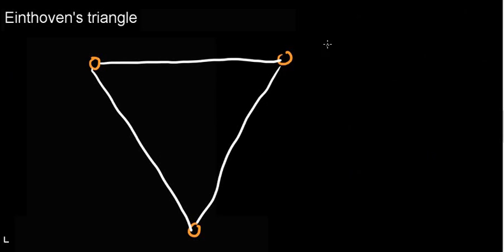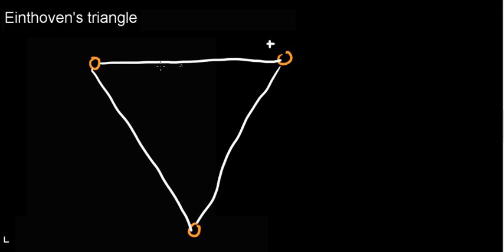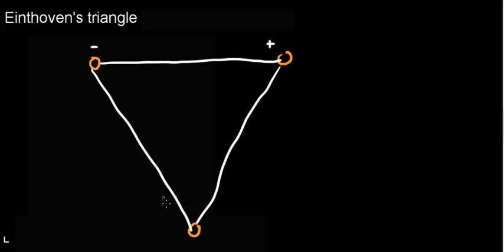Basically, if I read charge moving from one direction to another — let's say we have electrons moving in this direction — I'm going to have a positive reading. That's just a set standard that we have. So this side is going to be the positive reading. If I'm going down this side, I'll see a positive reading; negative if going the other way.